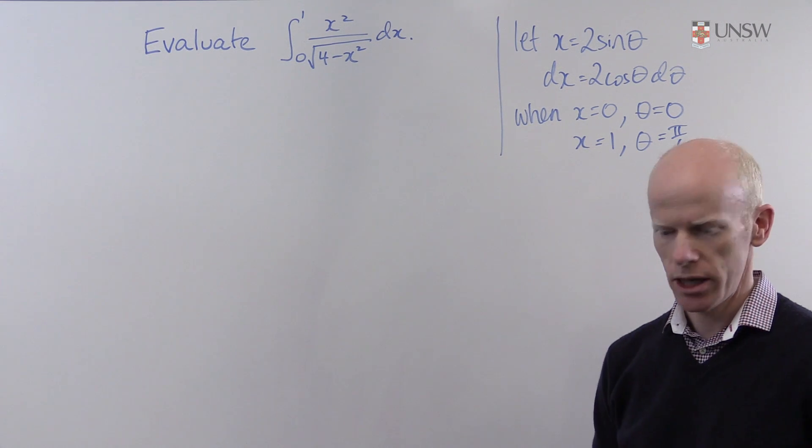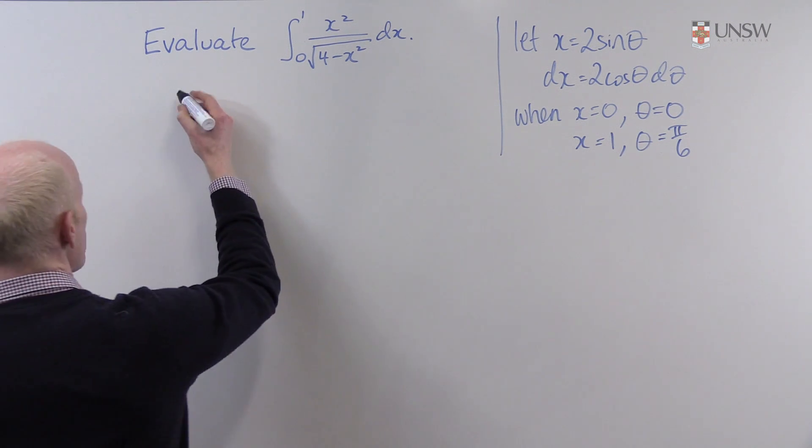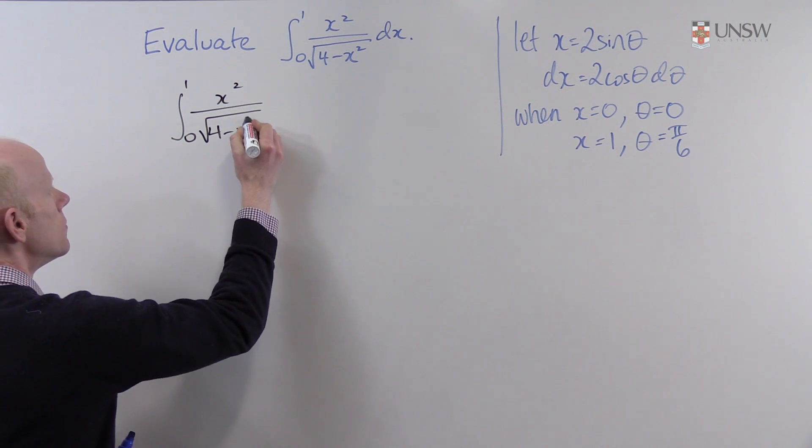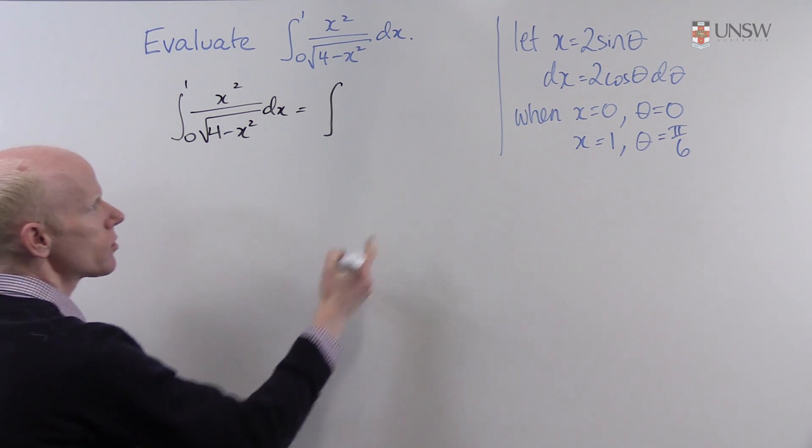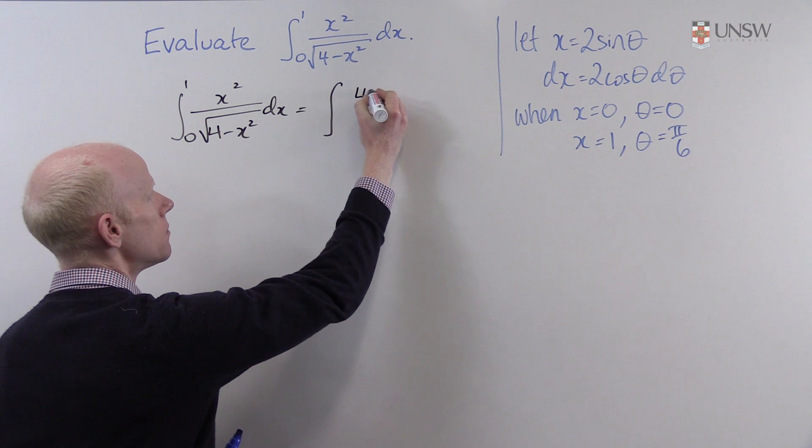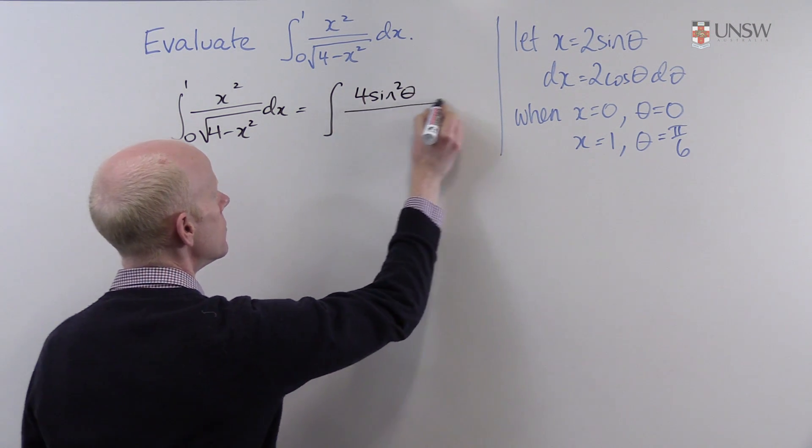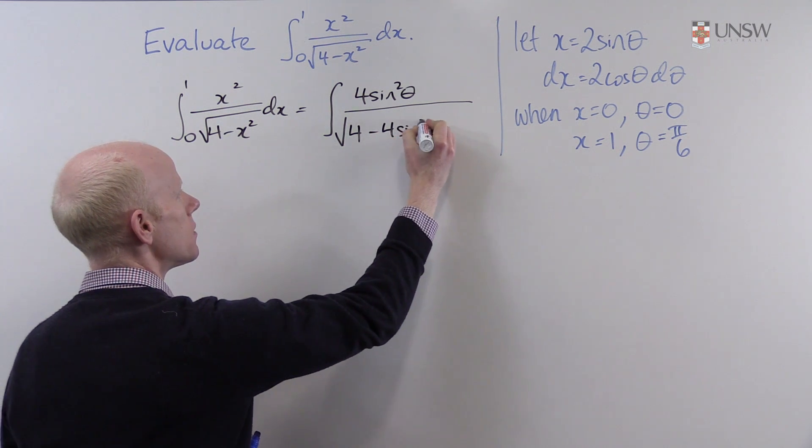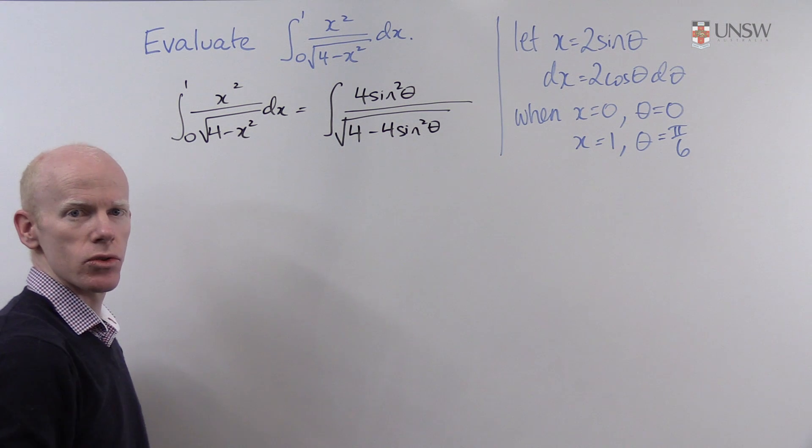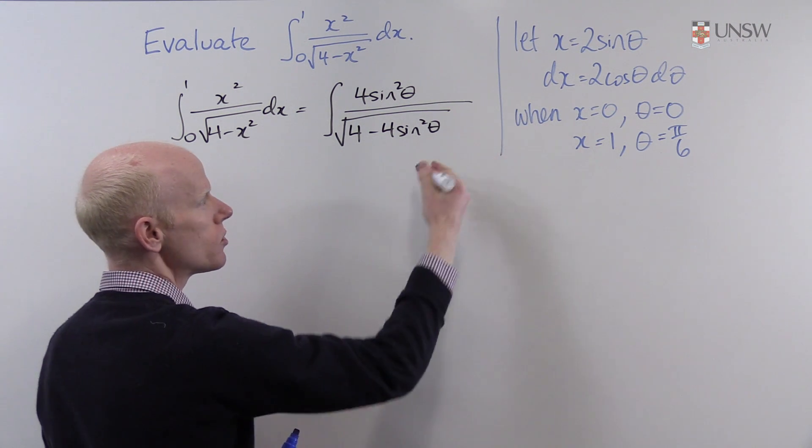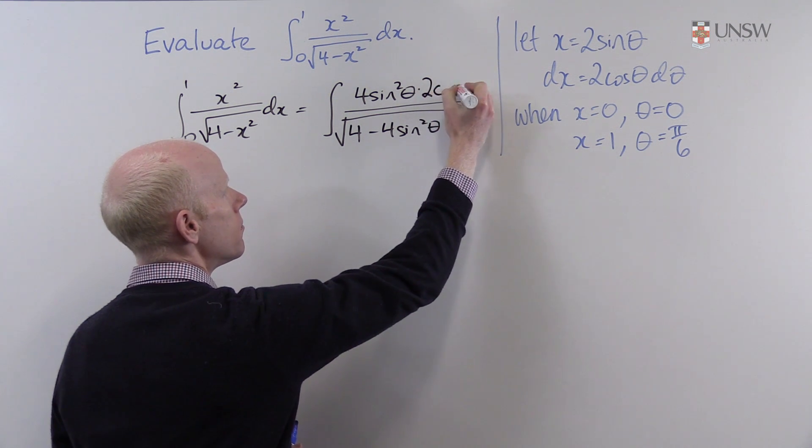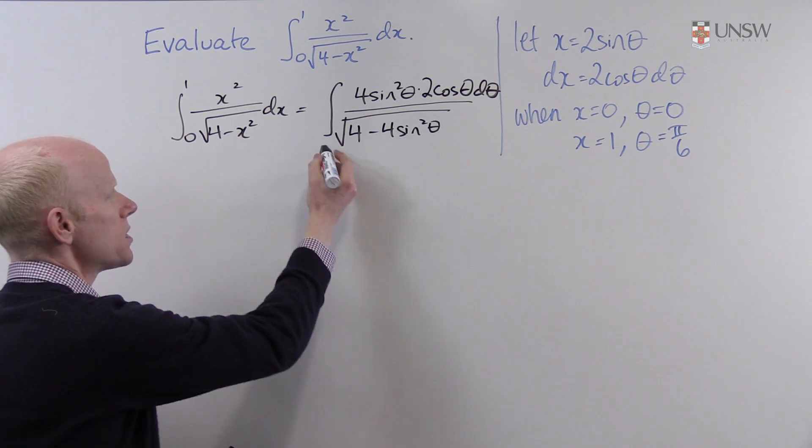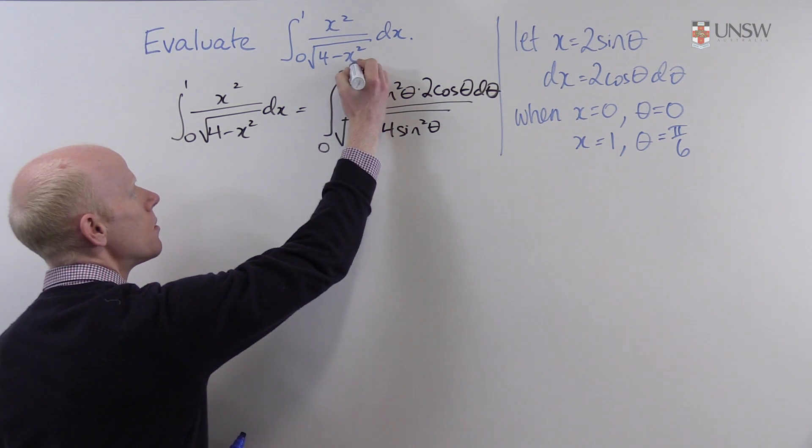That allows me to rewrite my integral as follows: the integral of 4 sin² θ over √(4 - 4 sin² θ), and it's very important to replace dx with 2 cos θ dθ, replacing the limits of integration with 0 to π/6.